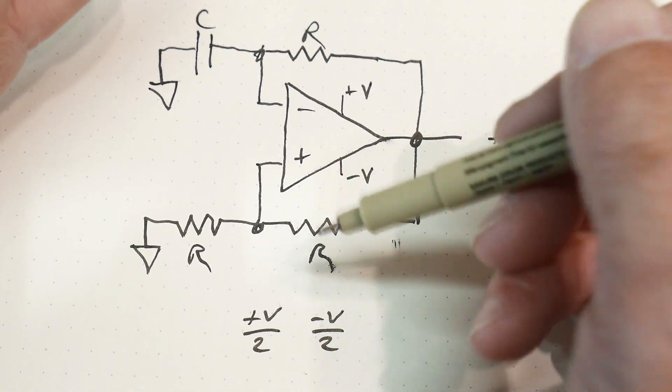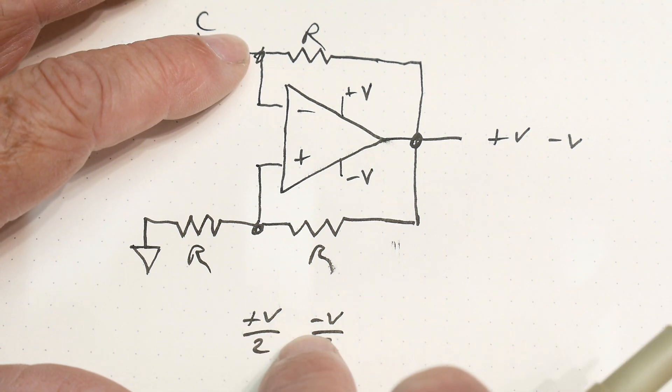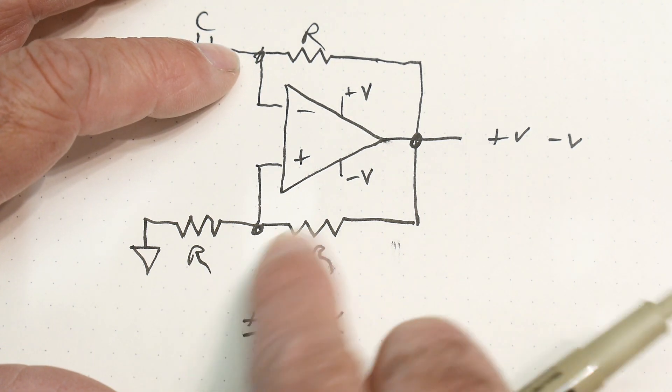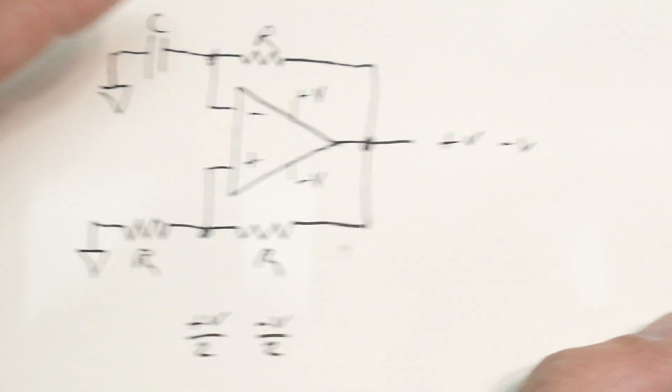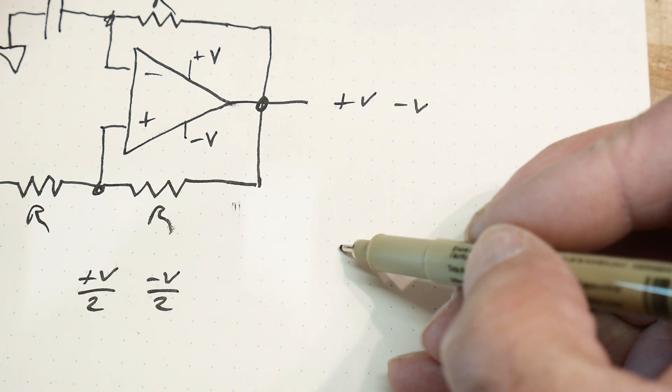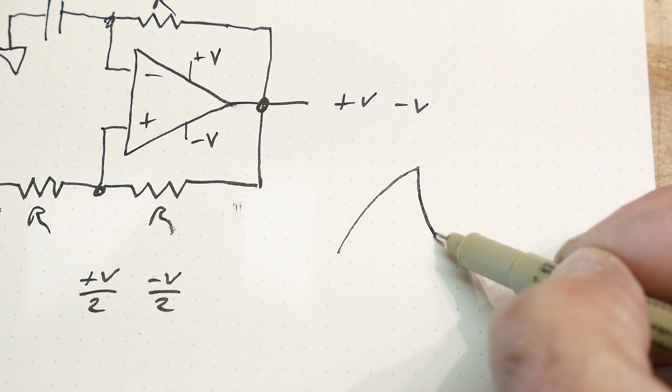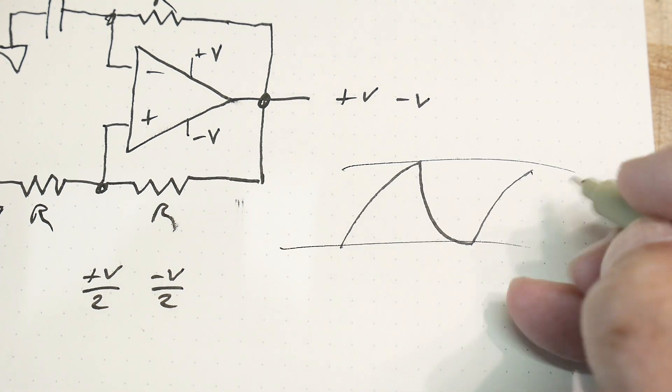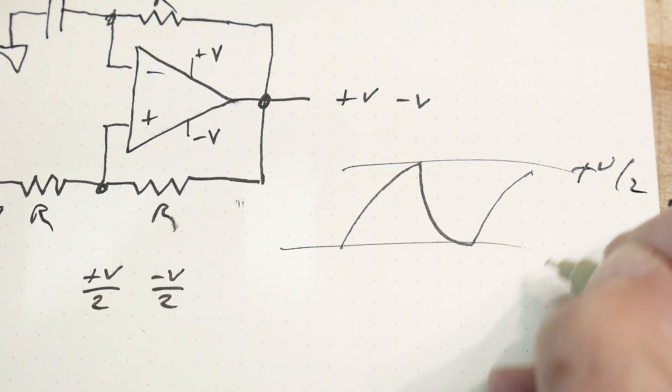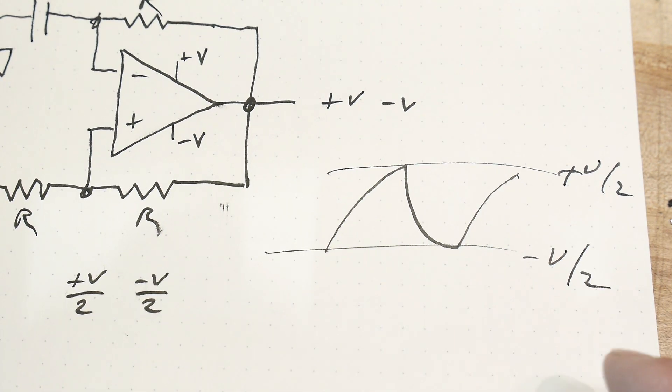So it's always going to be oscillating. The capacitor is always going to be going between plus V over 2 and minus V over 2. And the output is always going to be plus V or minus V. And so we're going to get the capacitor charged up and then the capacitor charged down. And the capacitor will go between plus V over 2 and minus V over 2. So that works great.